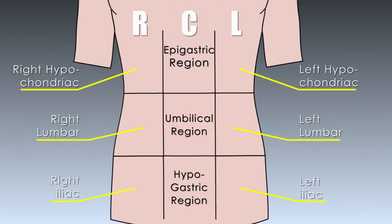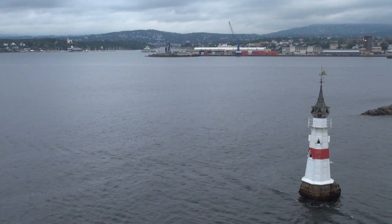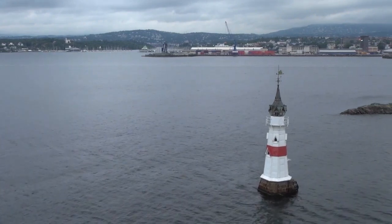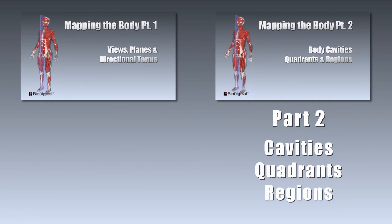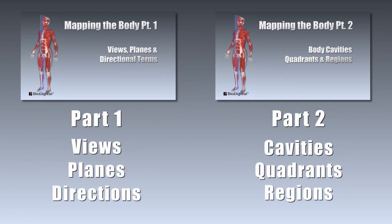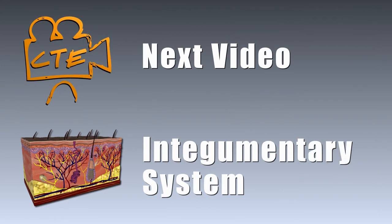It can also be split into three sections or nine regions. By now you should have a good idea on how to navigate and identify the parts of the body. We've just covered the cavities, quadrants, and regions. In part one we discussed the different views, body planes, and directional terms. Thanks for watching, and look for the next anatomy and physiology video from cteskills.com, in which we'll be covering the integumentary system.